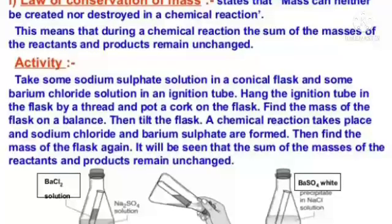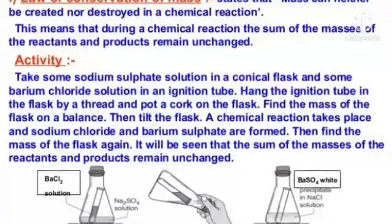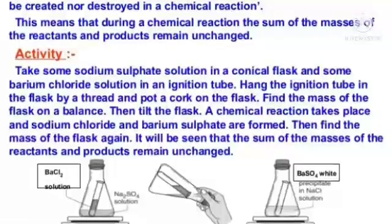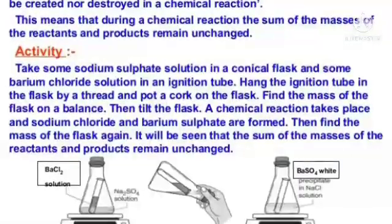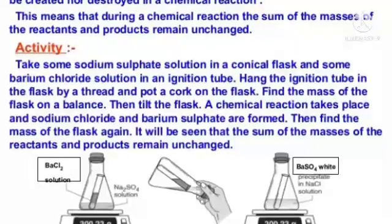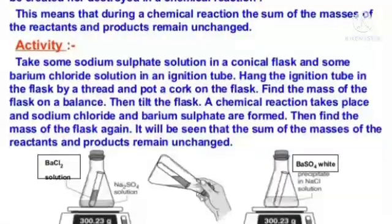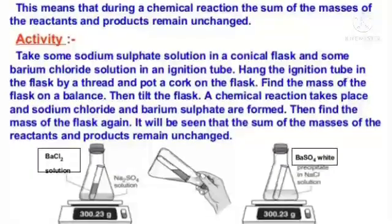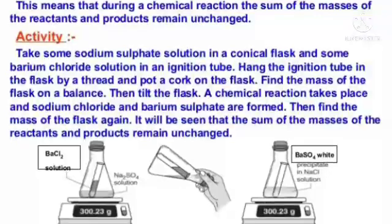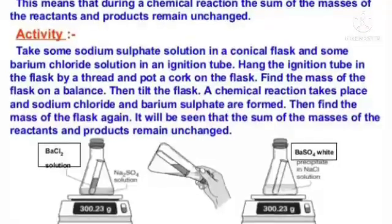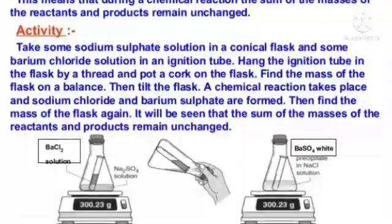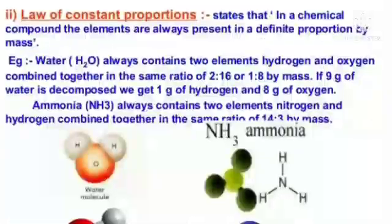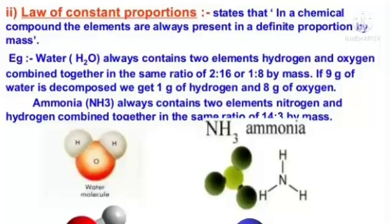Activity: Take some sodium sulfate solution in a conical flask and some barium chloride solution in an ignition tube. Hang the ignition tube in the flask by a thread and put a cork on the flask. Find the mass of the flask on a balance, then tilt the flask. A chemical reaction takes place and sodium chloride and barium sulfate are formed. Find the mass of the flask again — it will be seen that the sum of the masses of the reactants and products remain unchanged.